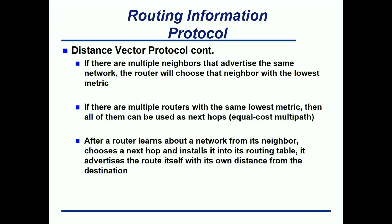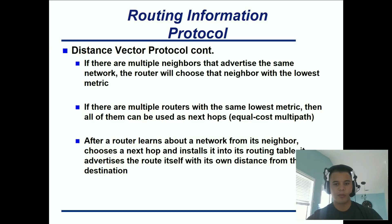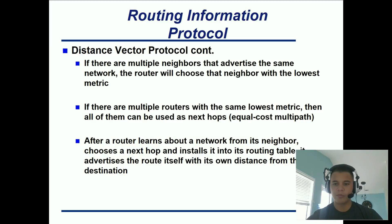If there are multiple routers or neighbors that advertise the same network, then a distance vector protocol will choose the one with the lowest distance or the lowest metric. In RIP version 2, it's pretty much hops — how many layer 3 devices do I have to go through to get to that destination network? And if there are multiple routers with the same lowest distance, then RIP version 2 will actually use both of them — it's called equal cost multipath.